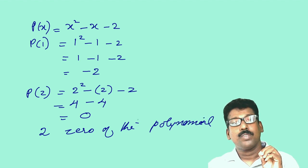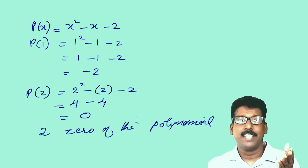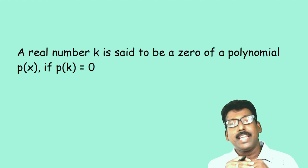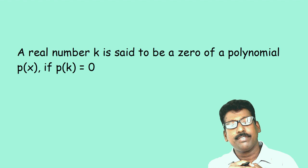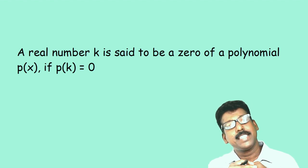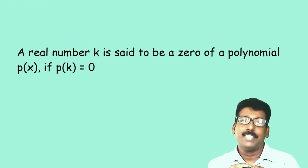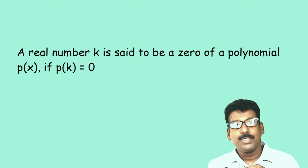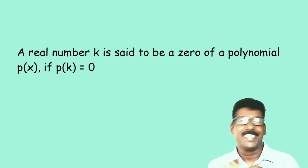So in general, a real number k is said to be a zero of the polynomial p(x) if p(k) = 0. We will discuss this in more detail in the next class. That's the content for today's class. Have a nice day!